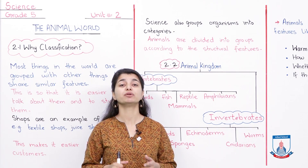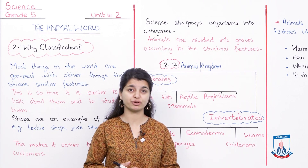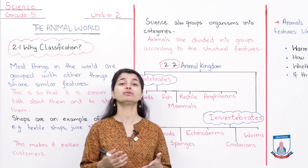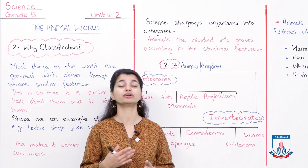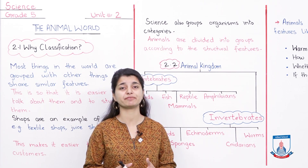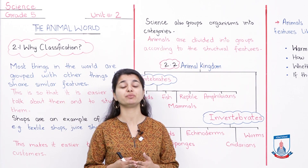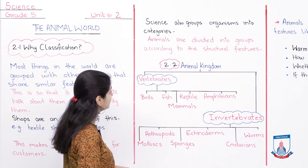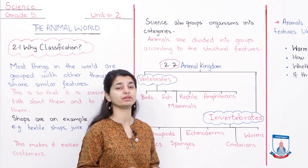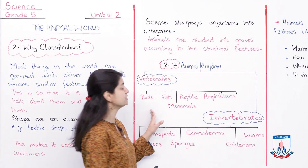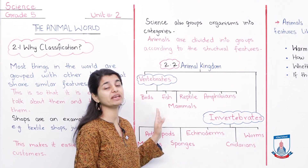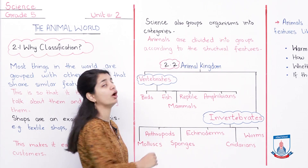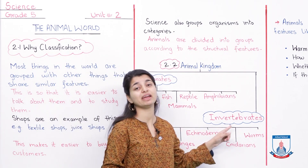Now we will learn about the different types and what kind of classifications there are. As you go into senior classes, especially if you study medicine, you will see more detailed classifications. For now, the classification we are mainly going to study is vertebrates and invertebrates. Let's see this chart. The main distinction in the animal kingdom is vertebrates and invertebrates. Vertebrates are animals that have a backbone or spinal column, while those with no backbone are called invertebrates.